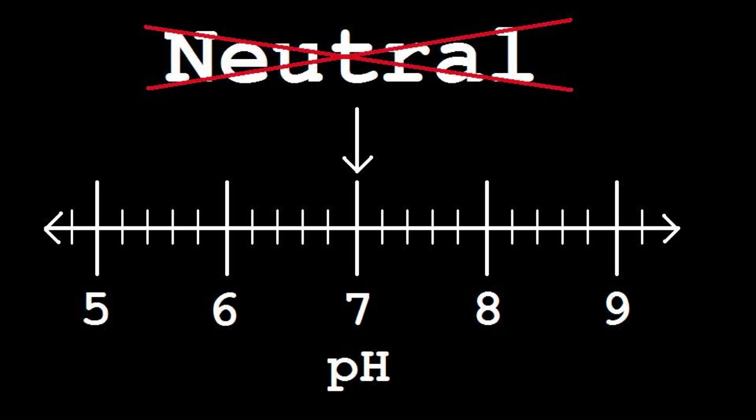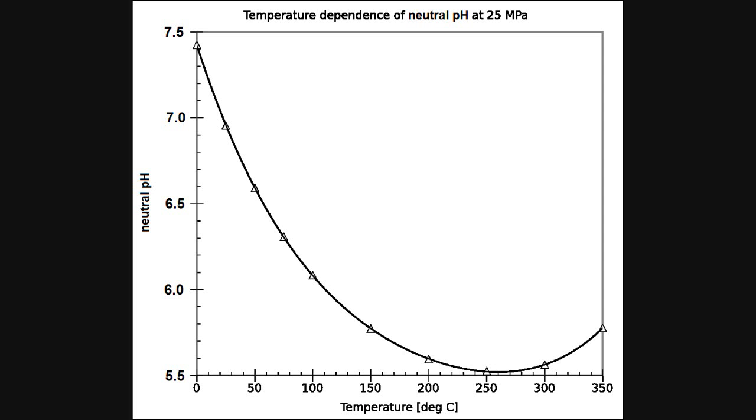The key to this variation in neutral pH is that the amount that water ionises itself is different under different temperatures and pressures. When this amount changes, it means that the concentration of hydrogen ions is different, changing the pH according to the formula discussed earlier, but because it's just water, the concentration of hydrogen and hydroxide ions are equal, and so the solution is still neutral.